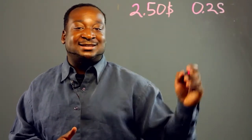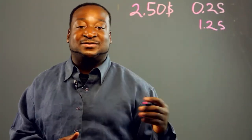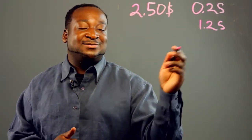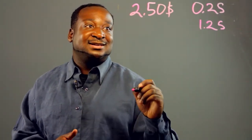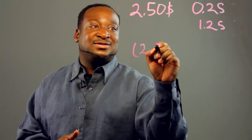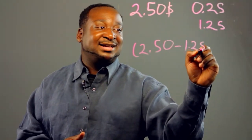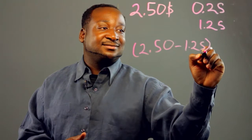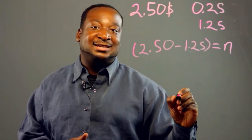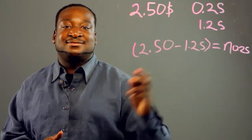So, how many pieces of candy can he get if he needs that $1.25 for lunch? We can come up with the algebraic equation. We can say 2.50 minus 1.25 equals the number of pieces of candy he could get, times 0.25.